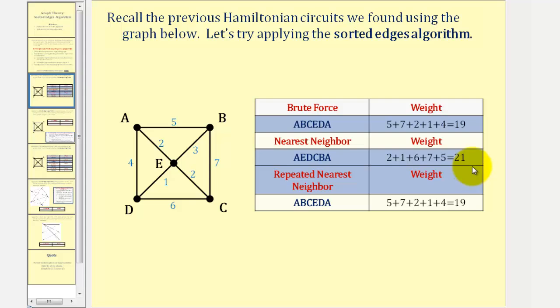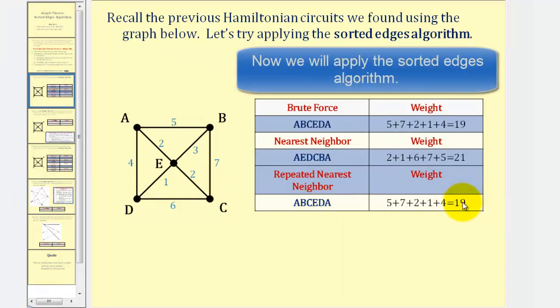And then in our last lesson, we applied the repeated nearest neighbor algorithm and found the circuit A, B, C, E, D, A with a total weight of 19.